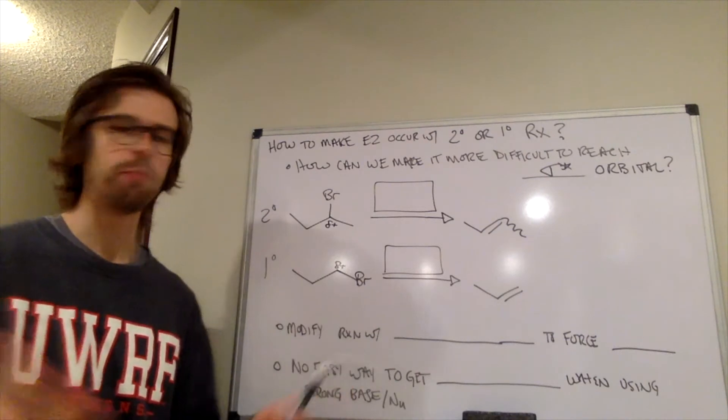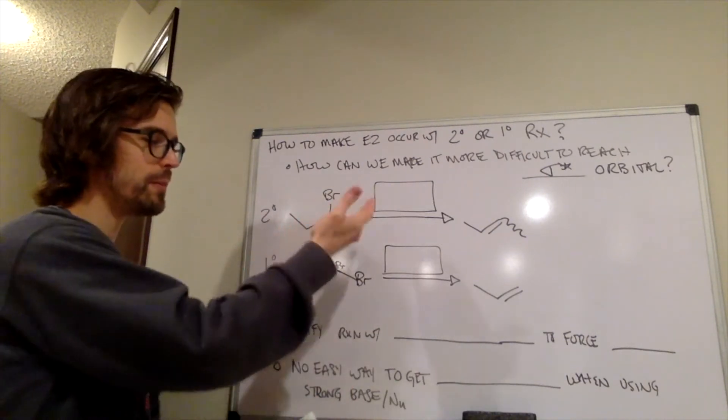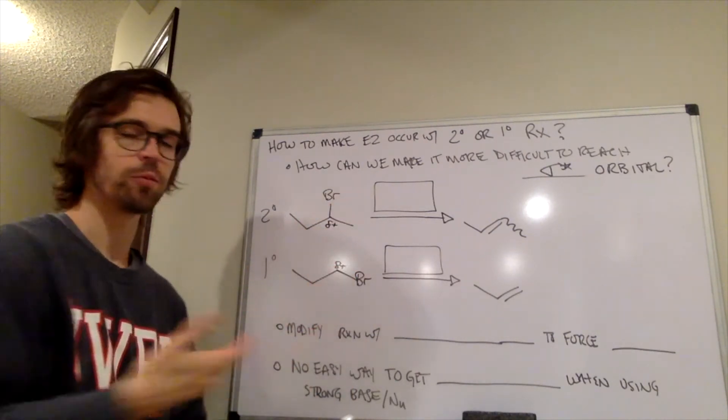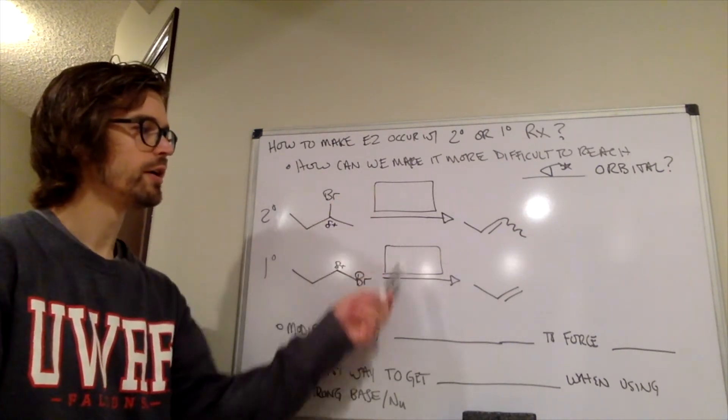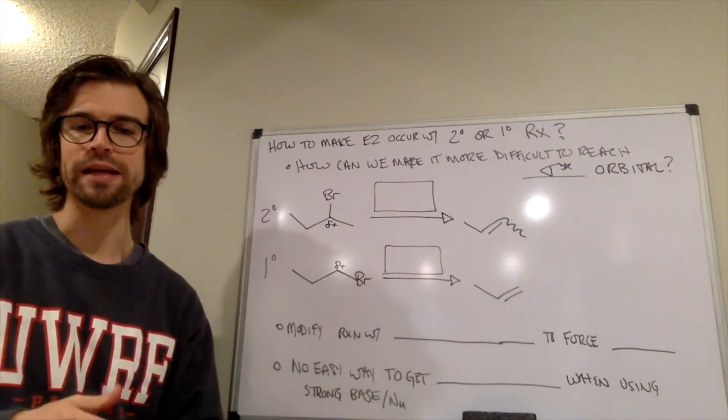But in these cases, it's pretty open. Here, it would be a mixture, but here, it's open enough to get almost exclusively SN2. But how can we make it challenging for the nucleophile or base to get there?